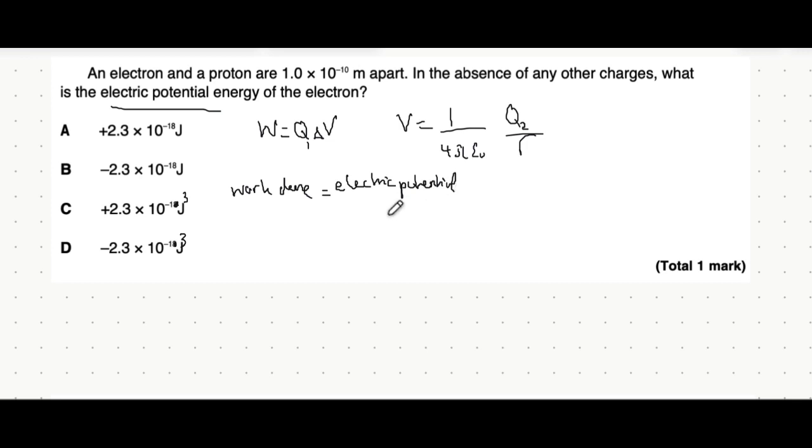So to get to that electric potential energy we have to multiply charge q1 by the potential difference which is this whole potential equation. So 1 over 4 pi e0 q2 over r.